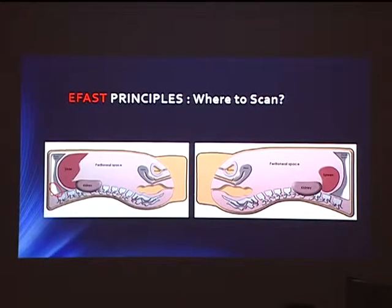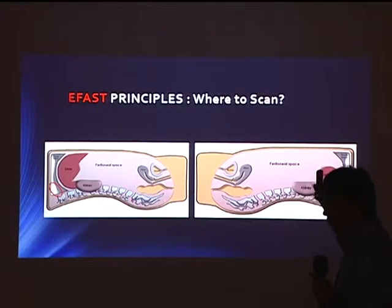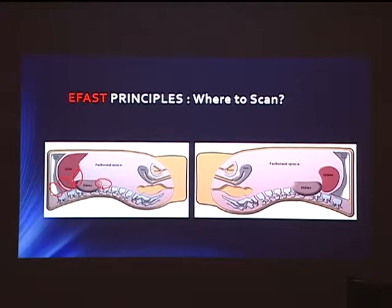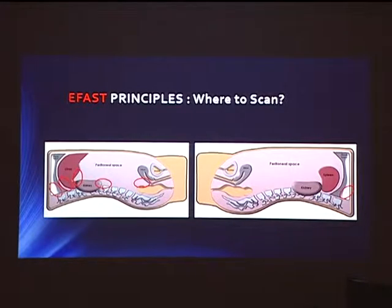You look at the pleural spaces for hemothorax. This part is not exactly described in the eFAST paper, but over time people recognised we can also use the FAST technique to look for hemothorax. And of course, the sub-diaphragmatic space — blood can collect there — Morrison's pouch, the infrarenal pole. In females there's the pouch of Douglas; in males, the recto-vesical pouch. On the other side, similarly: pleural space, sub-diaphragmatic space, splenorenal space, and the inferior pole of the kidney.